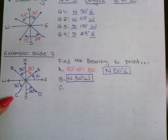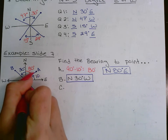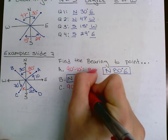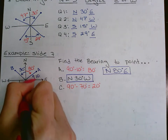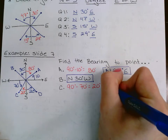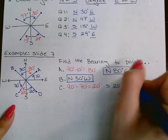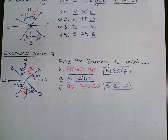Point C is in quadrant 3, so we start from south going toward west. They gave the angle from the x-axis (70°), so we need 90° − 70° = 20°. The bearing for point C is S 20° W.